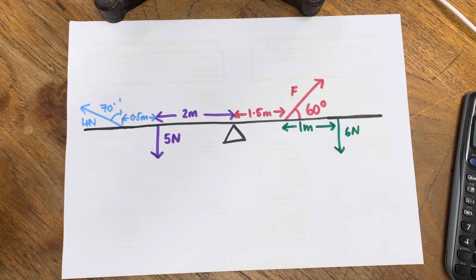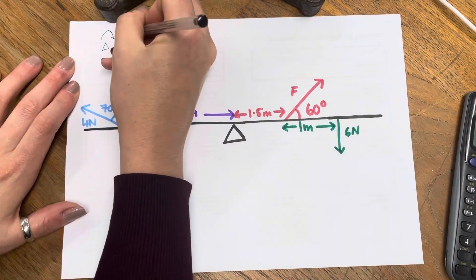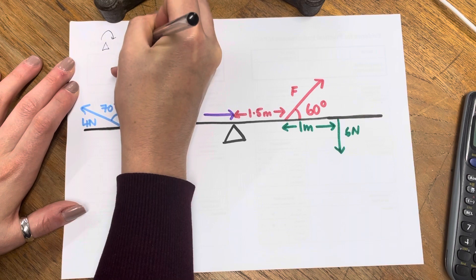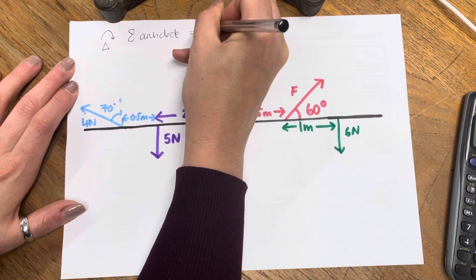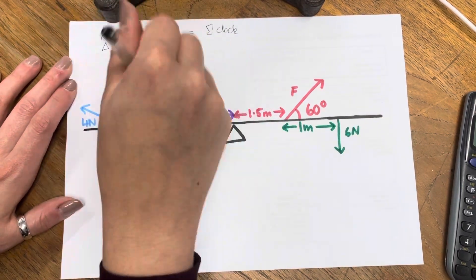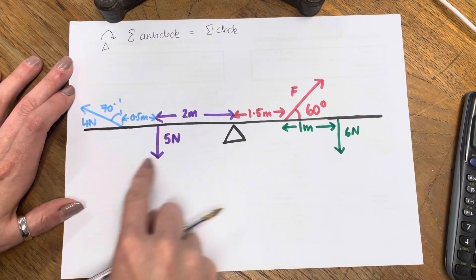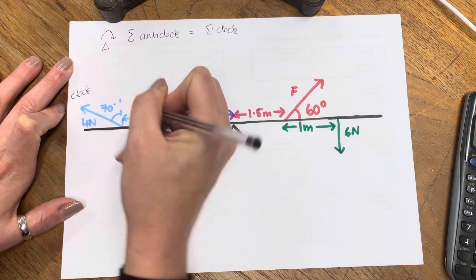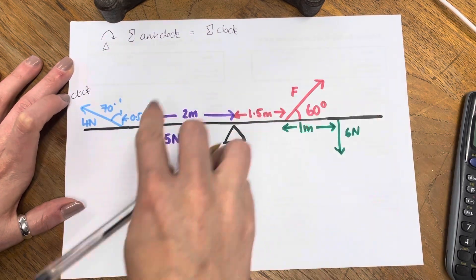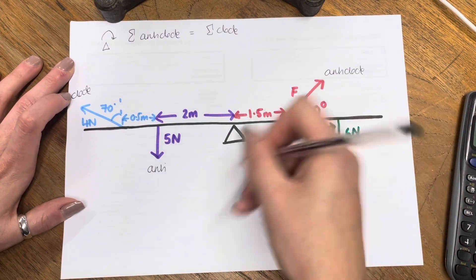Final problem — lots of forces. Press pause, see what you can do, and when you're ready press play. Taking moments around the pivot once again: sum of anticlock equals sum of clock. Going anticlockwise first makes more sense on the left, clockwise on the right. Identifying all the forces: this one is going clockwise, this one is anticlockwise, this one is also anticlockwise overall, and this one would be clockwise.